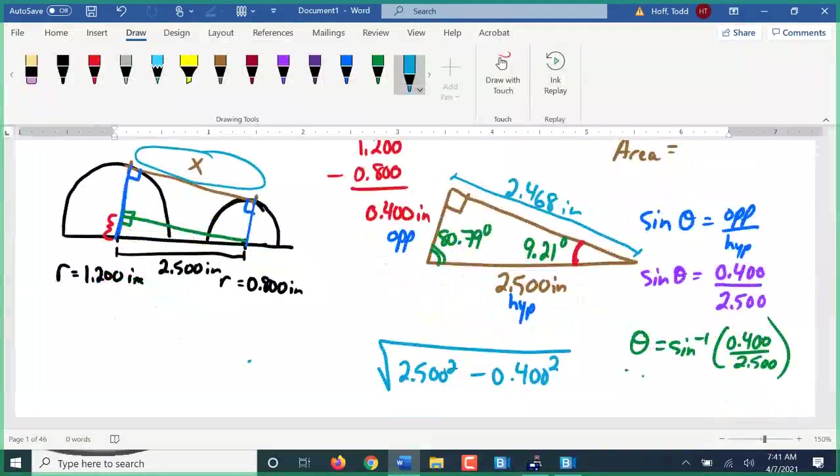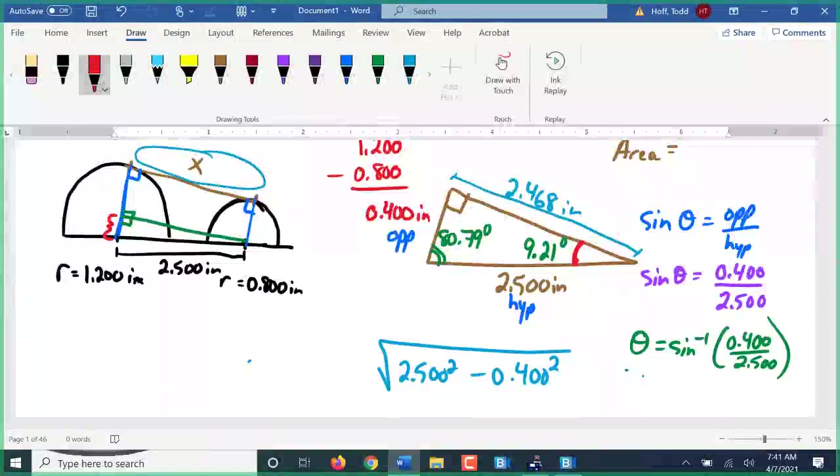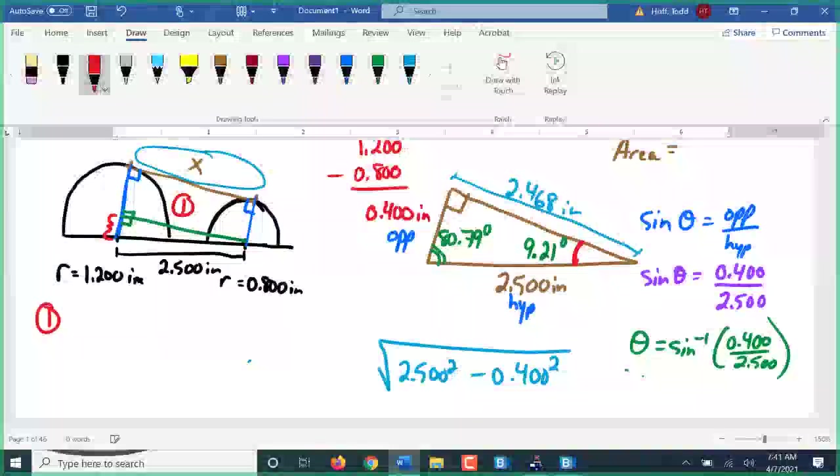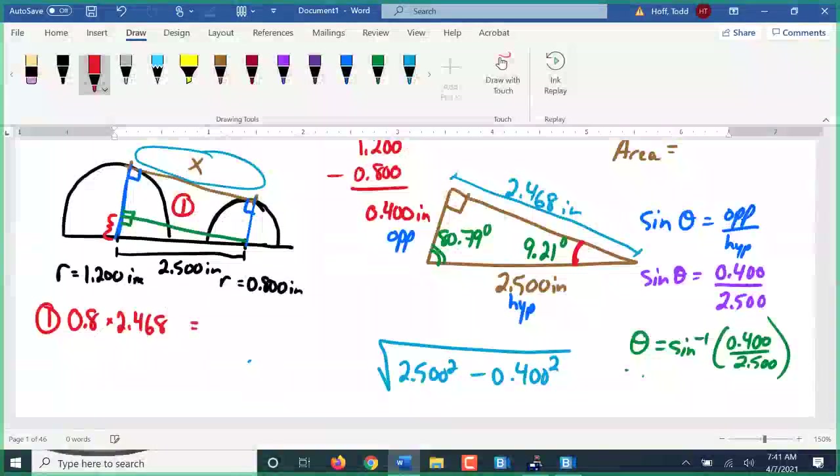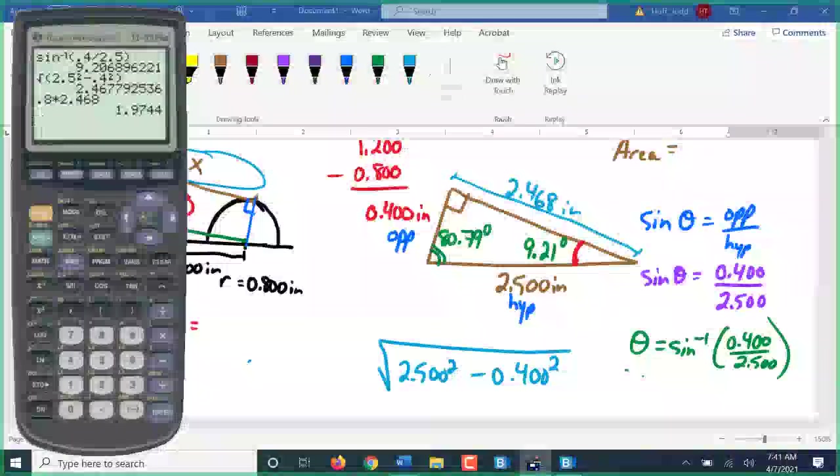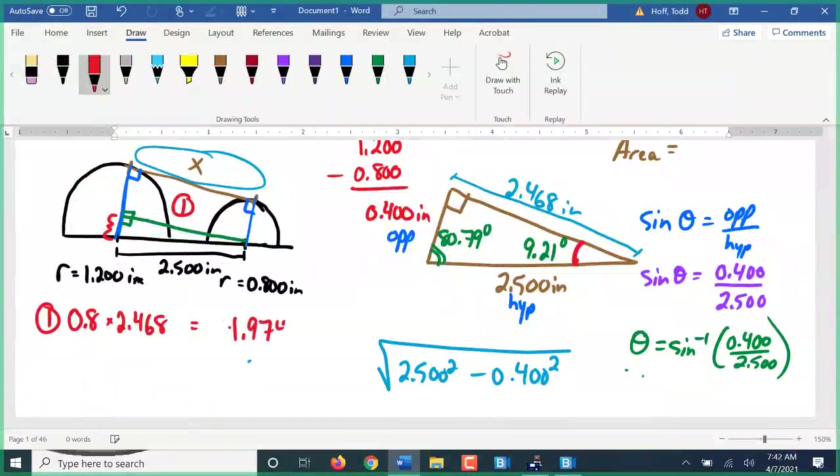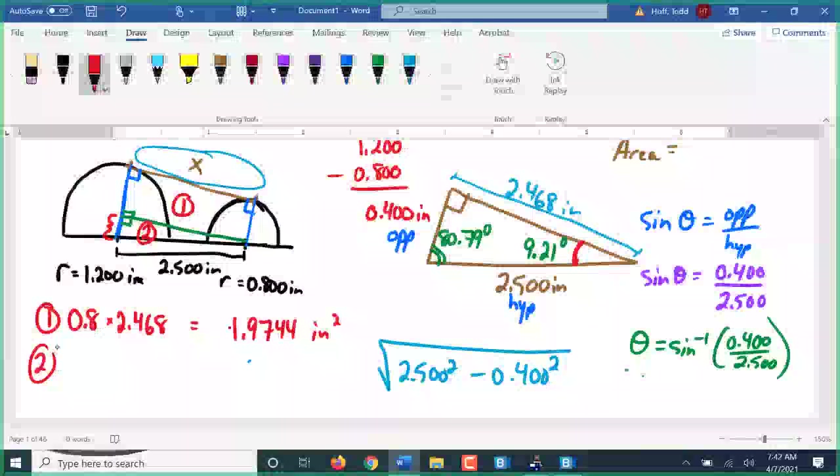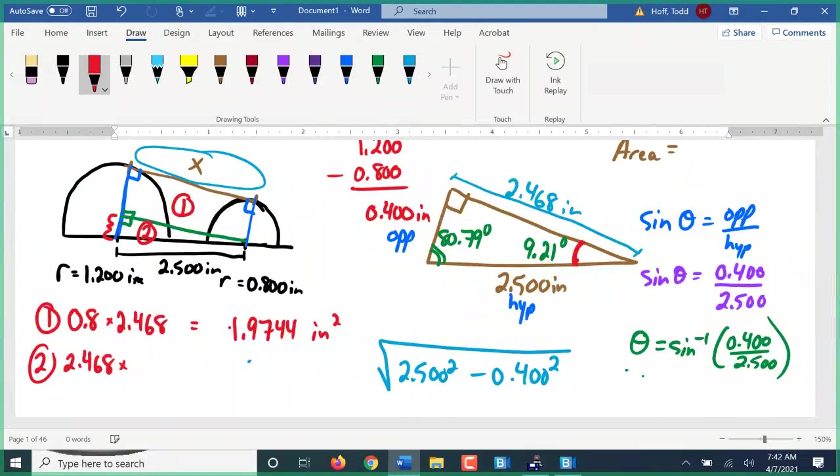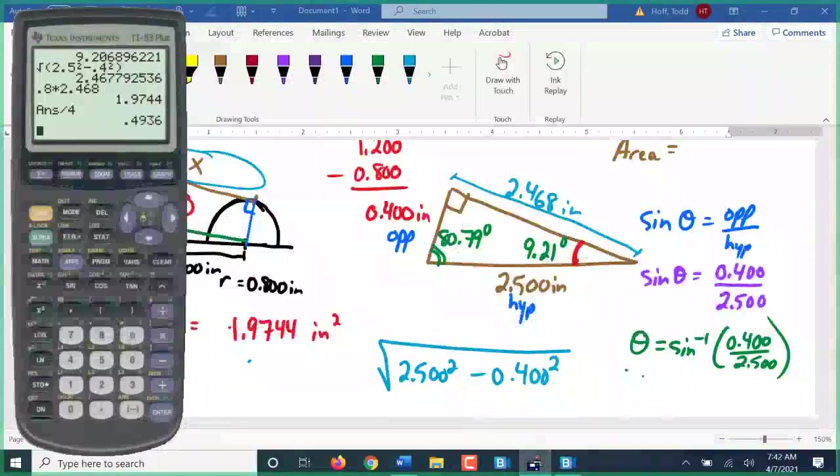Area. I have four distinct areas to find. I'll label the first one. That rectangle, how do I find that area? Perfect. 0.8 times 2.468. That's 1.9744. Second area, 2.468 times 0.4 divided by 2. 0.4936.